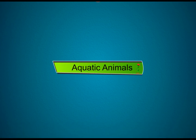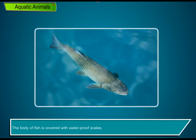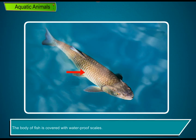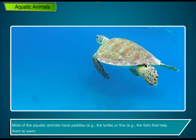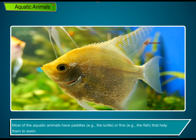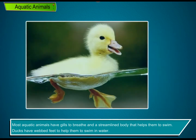Aquatic animals — fish, prawns, crabs, and turtles are some examples of aquatic animals. The body of fish is covered with waterproof scales. Most aquatic animals have paddles, like the turtle, or fins, like the fish, that help them to swim. Most aquatic animals also have gills to breathe and a streamlined body that helps them swim.